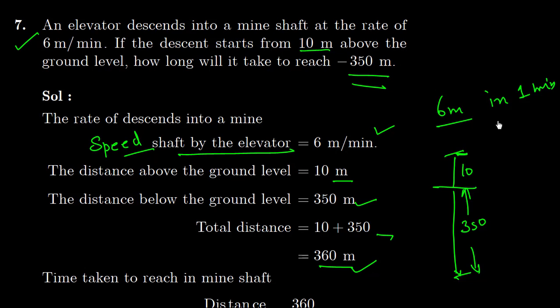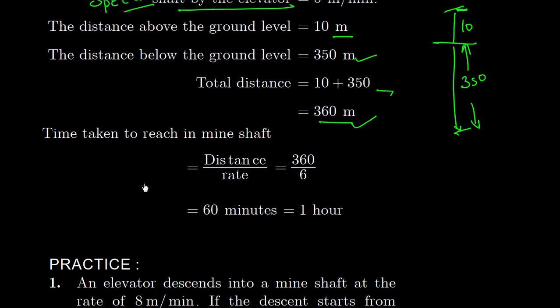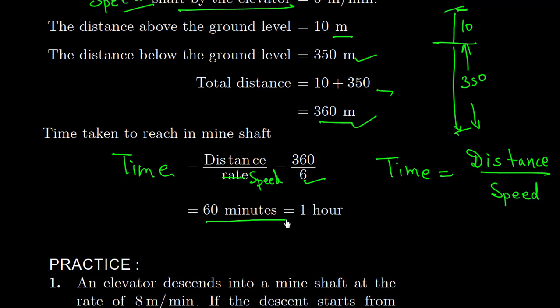So this is the distance, this is the speed. Now we have a formula from your science book: time is equal to distance upon speed. You can also call it rate. Time equals distance upon speed. So this becomes 360 upon 6, which equals 60 minutes, or 1 hour. This is our answer.